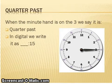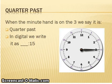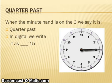Our next lesson is about quarter past and quarter to. Let us start with quarter past. When the minute hand is on the three, we say it is quarter past. In digital, we write it as .15.